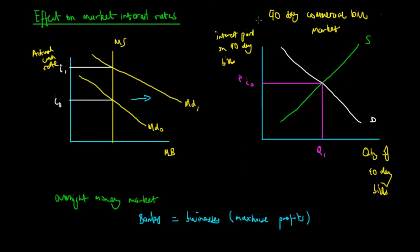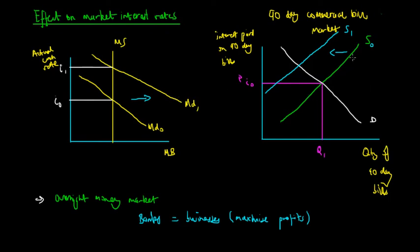Because these are closely related substitute products, the supply of 90-day commercial bills would decrease. We can see a shift to the left of the 90-day commercial bill supply from S0 to S1. This is because those who were previously lending in the 90-day bill market would now try to lend in the overnight money market because of the higher level of actual interest rate. Additionally, because businesses wish to borrow at the lower rate of interest, the demand for 90-day bills increases concurrently.